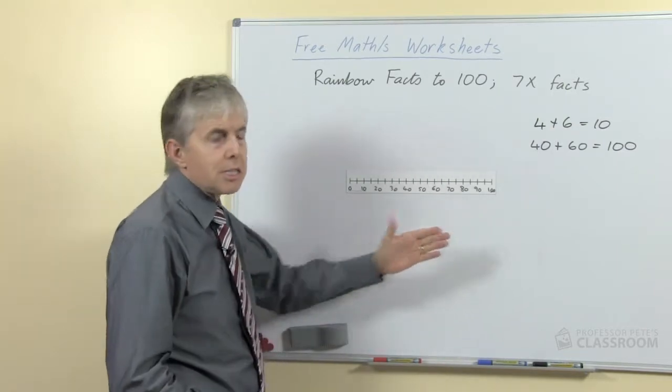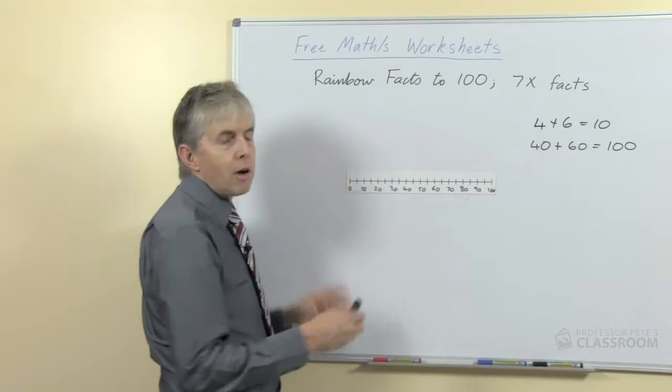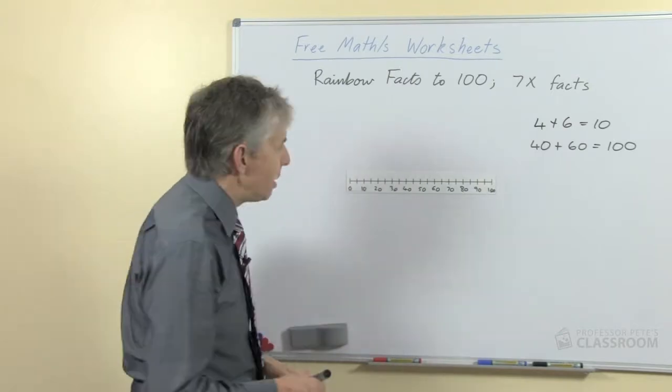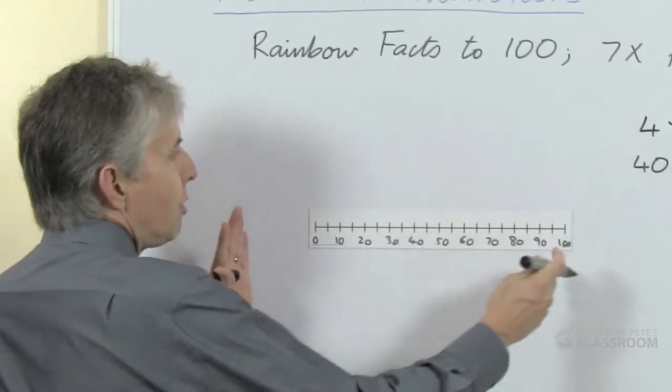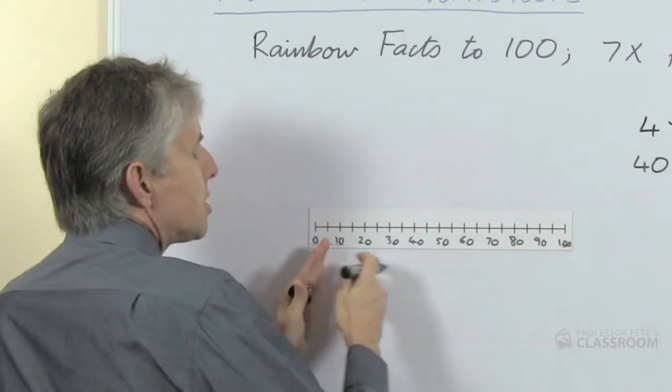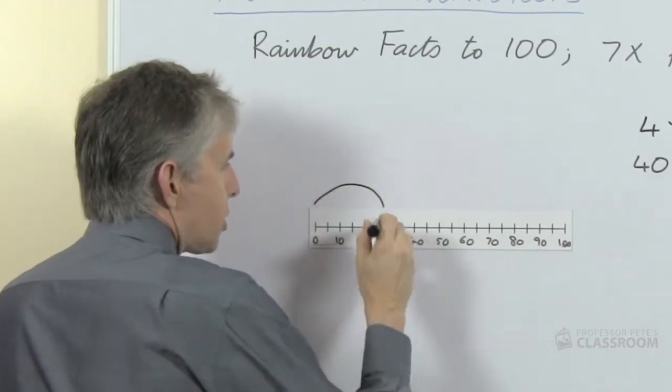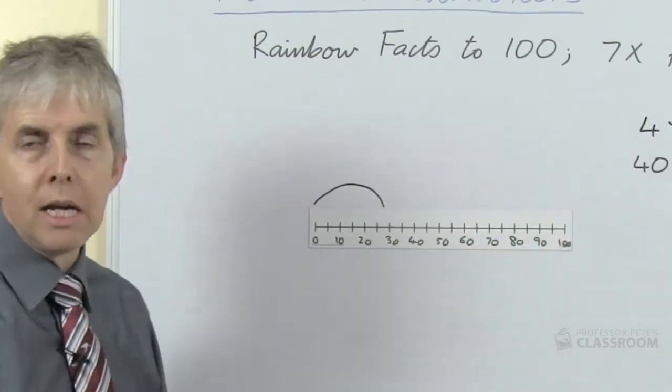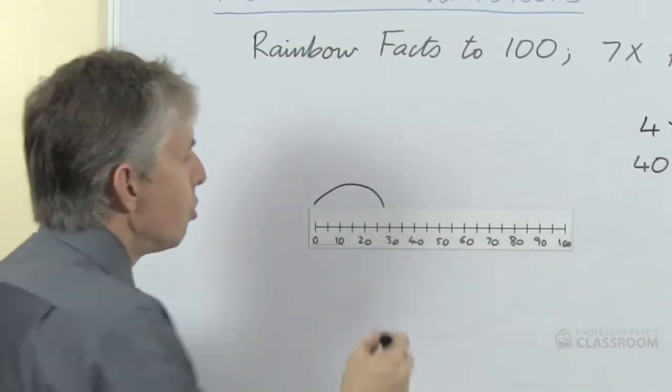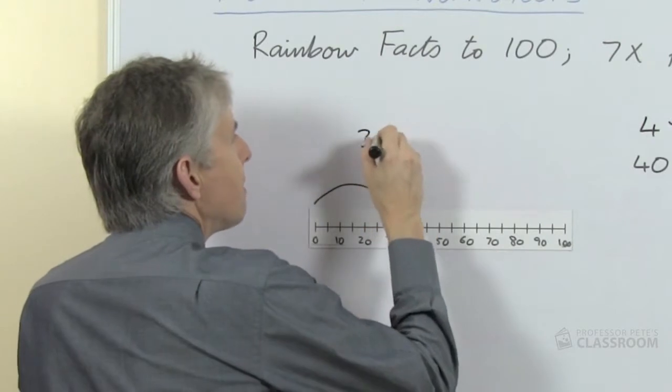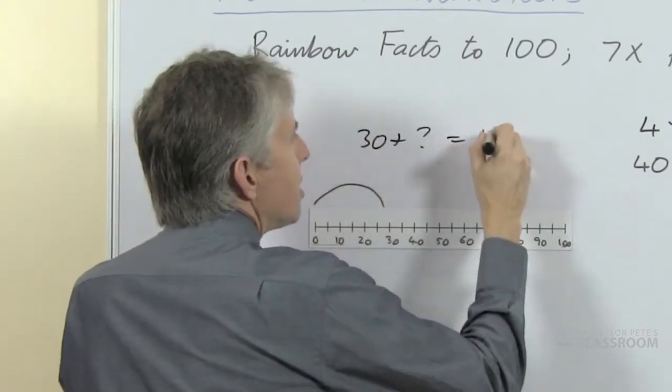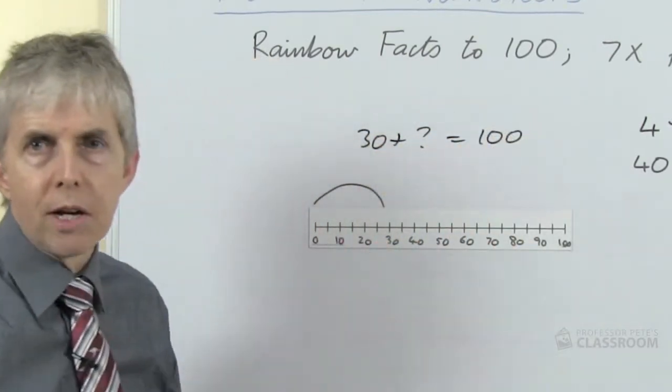We can use a number line to show the same thing, so we're not drawing the rainbow this time, although you could possibly do that, but just the idea that we've got numbers up to 100 here. If this is all the numbers to 100, if we said let's start with a hop to 30, how much more do we need to get up to 100 or 30 plus what equals 100? That's the idea of a Rainbow Fact up to 100.